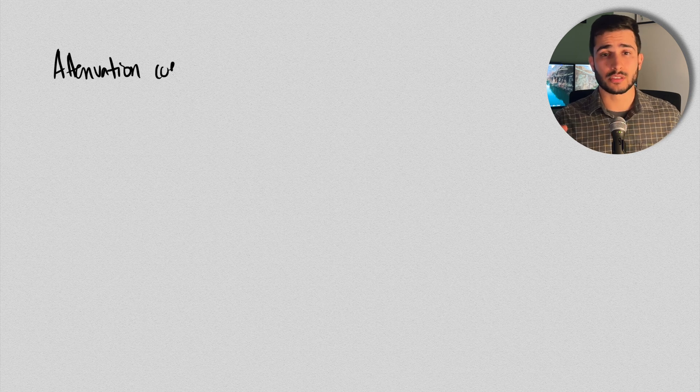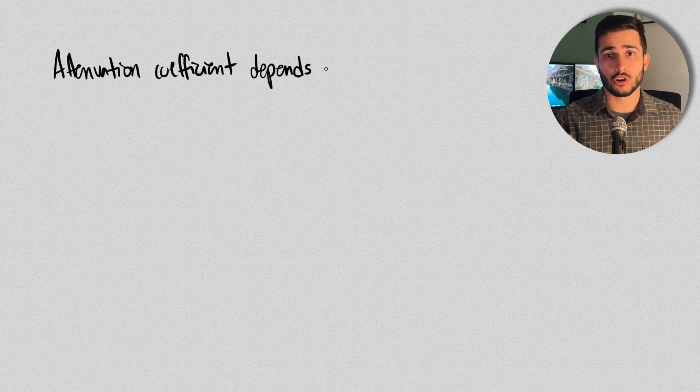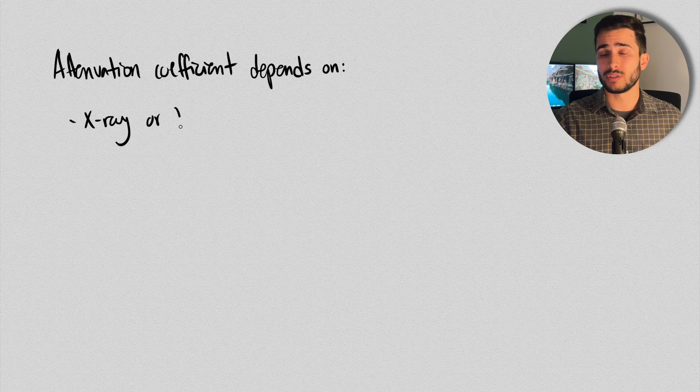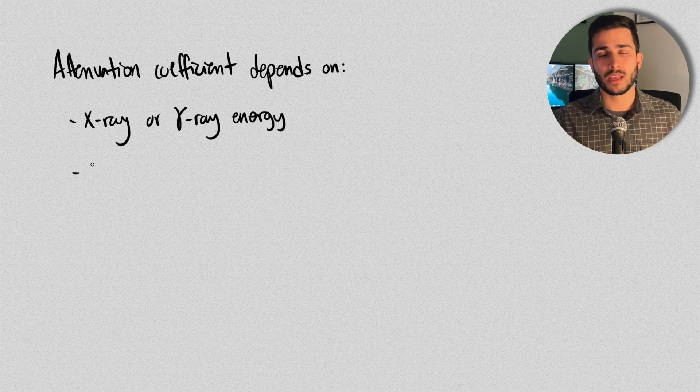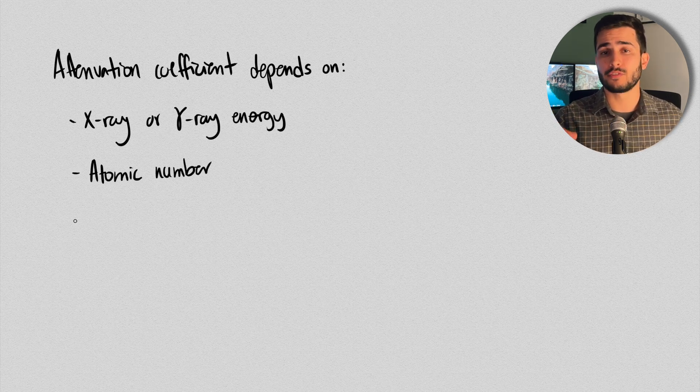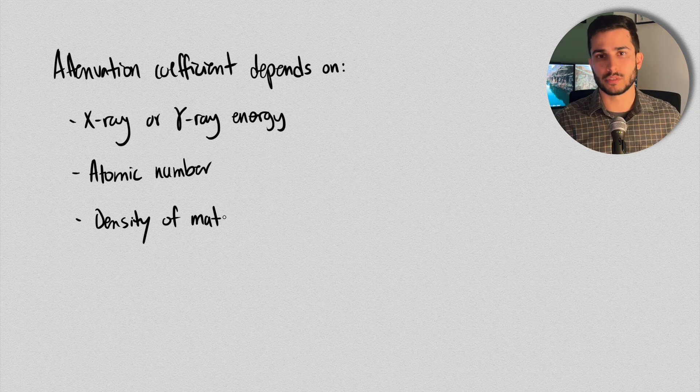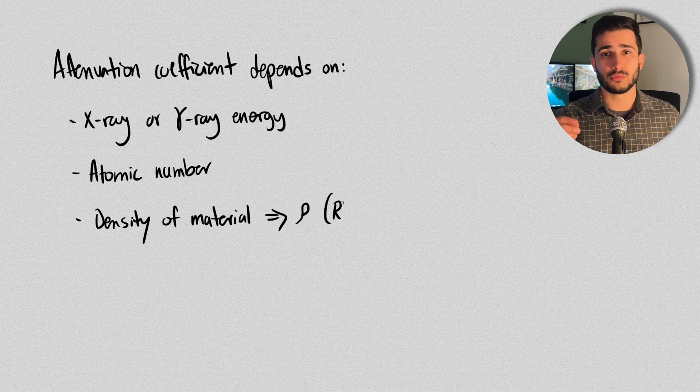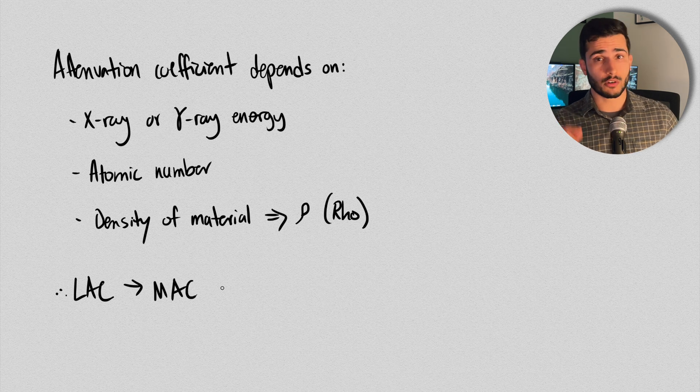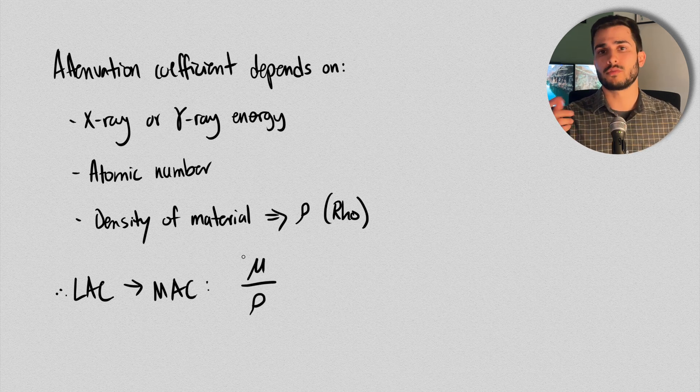Also, another important point to take into consideration is that attenuation coefficients are not only dependent on X-ray or gamma-ray energy, but also the atomic number and therefore the density of the absorbing material, which is given by the symbol ρ. So going from linear attenuation coefficient to mass attenuation coefficient, you just divide μ by ρ, the mass density value.